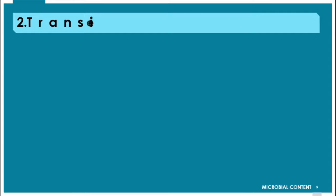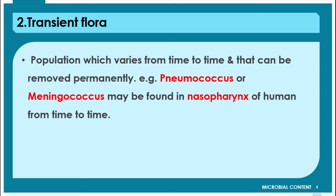The transient flora means the population which varies from time to time and can be removed permanently. The best example is Neisseria meningococcus, which may be found in the nasopharynx of humans from time to time — it is not constantly present. It may get removed and again it may appear. That is why it is known as the transient flora.